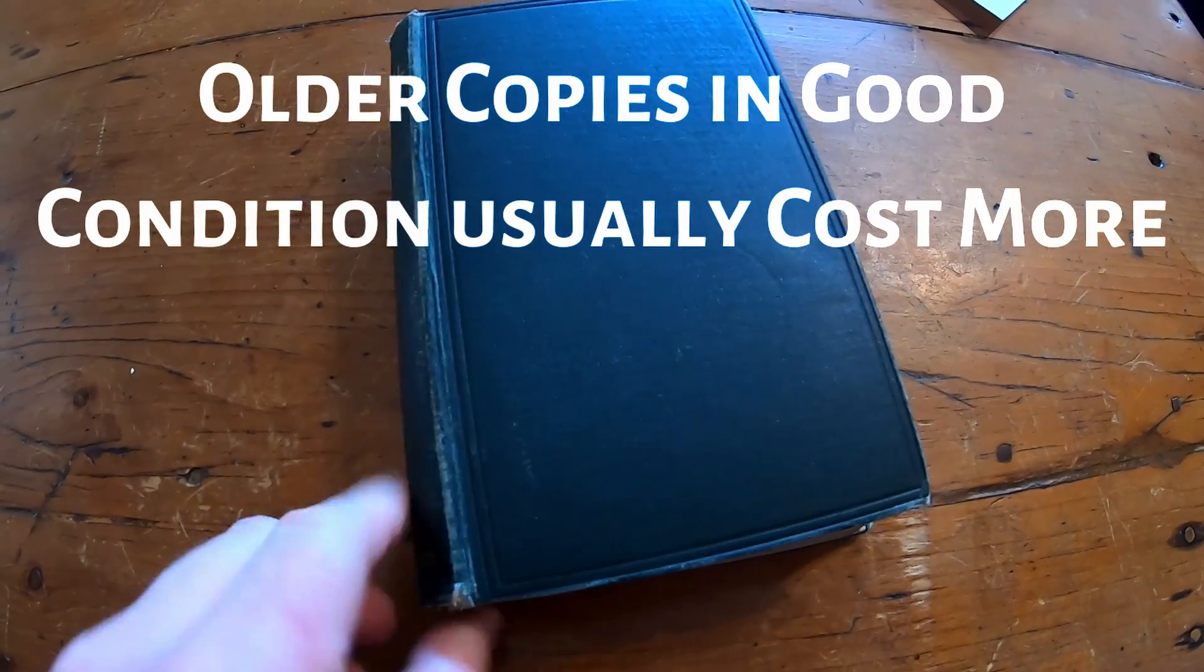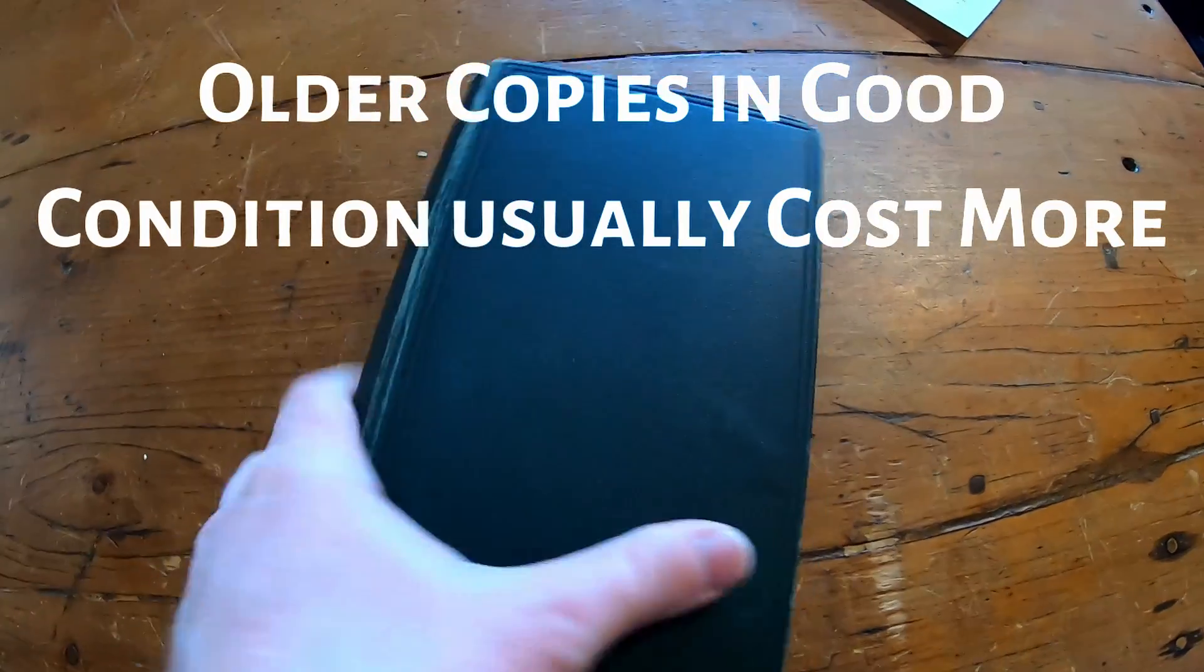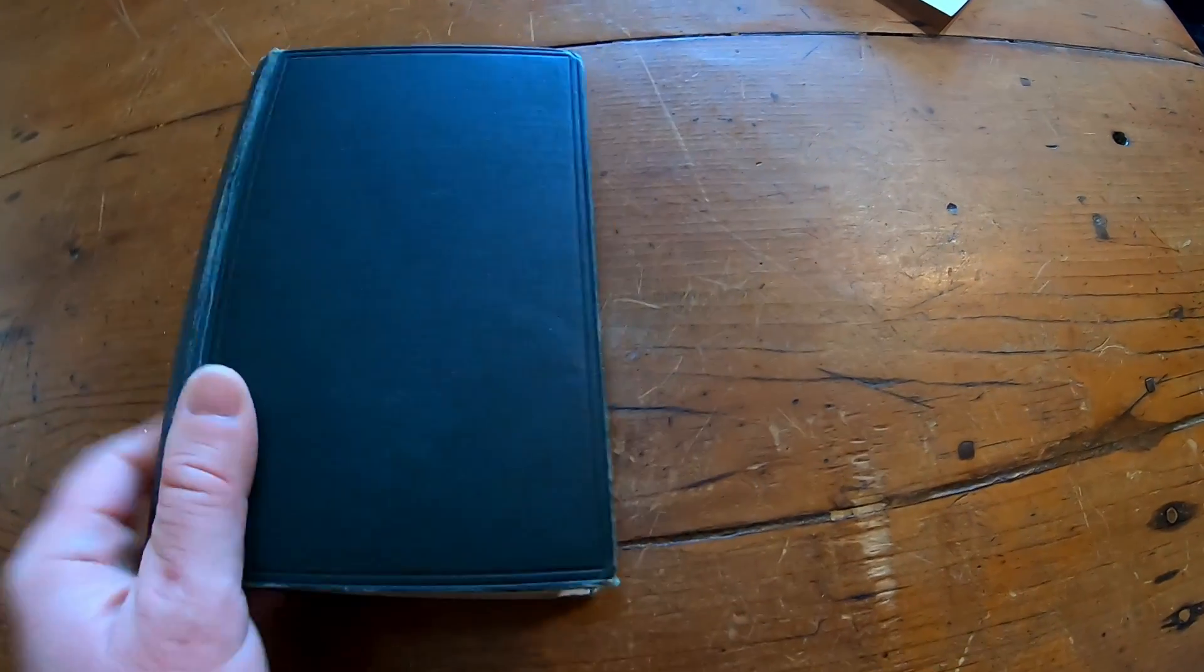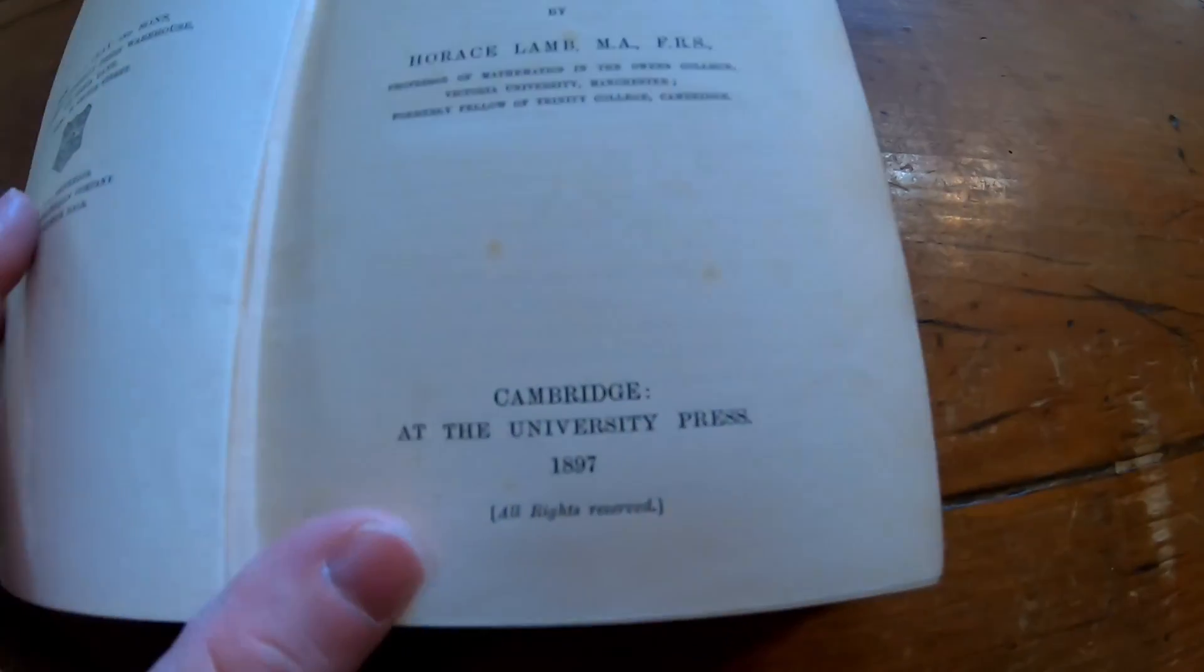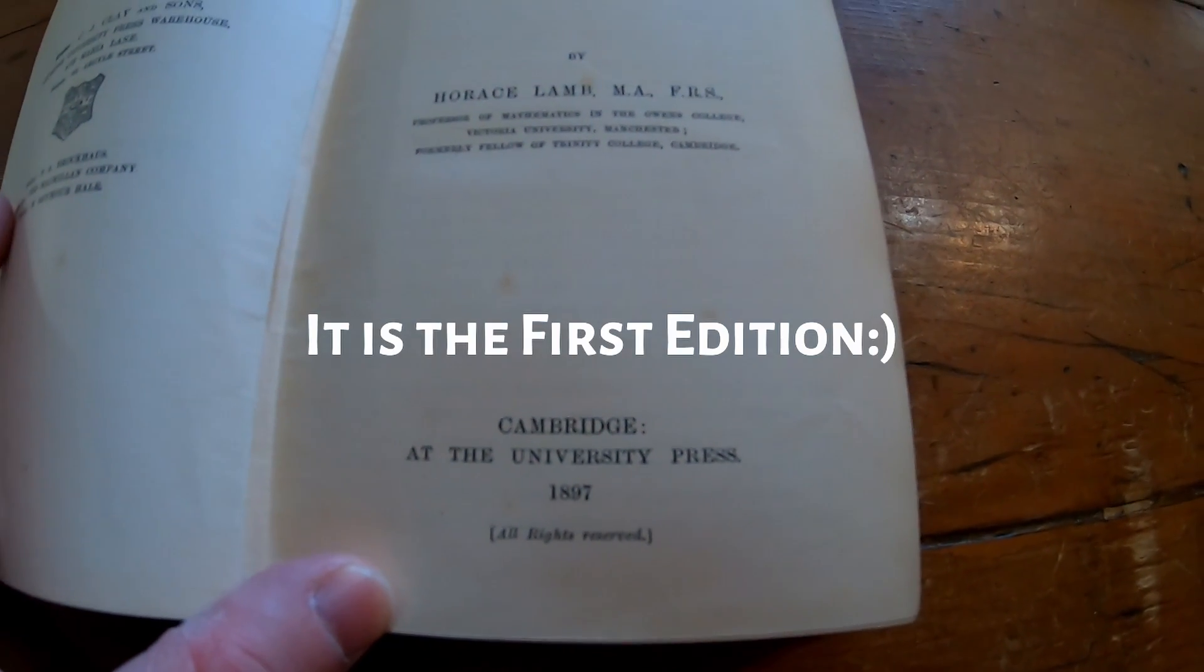And the price varies with the condition. If you try to get this book now, you'll have a hard time finding it inexpensively. If you look for a copy that's in really good condition, it'll probably cost a bit of money. This copy, just to show you, it's signed 1898, but this copy is actually from 1897. And I don't know if this is the first printing.